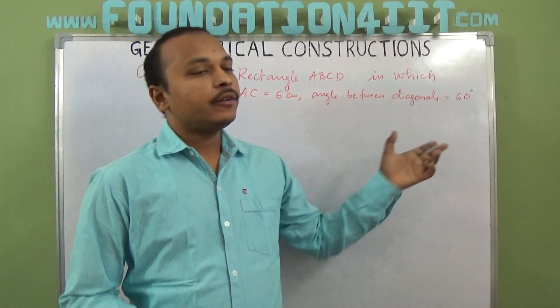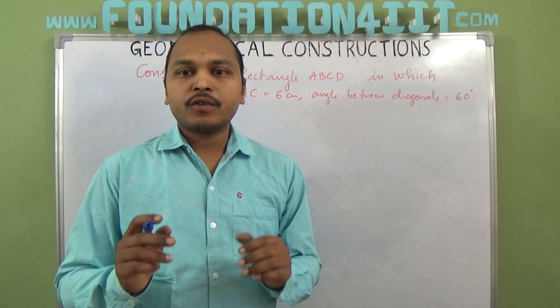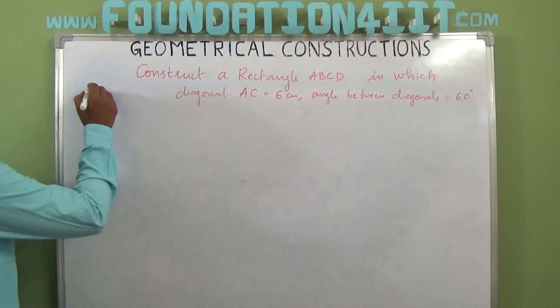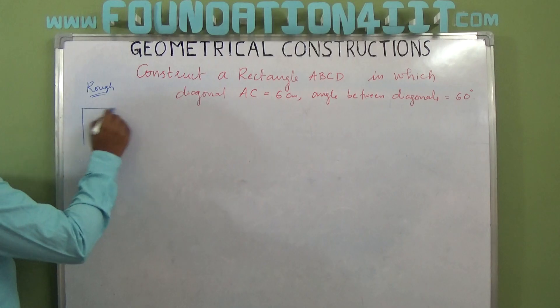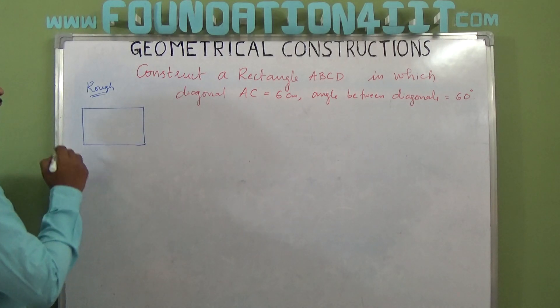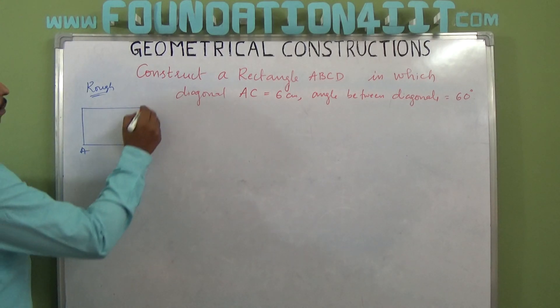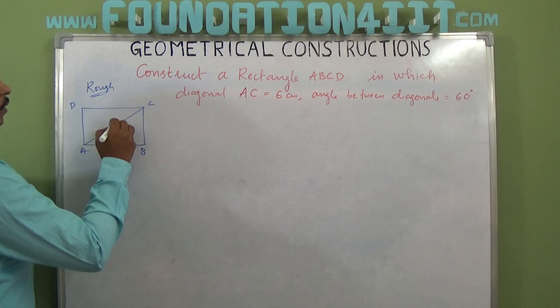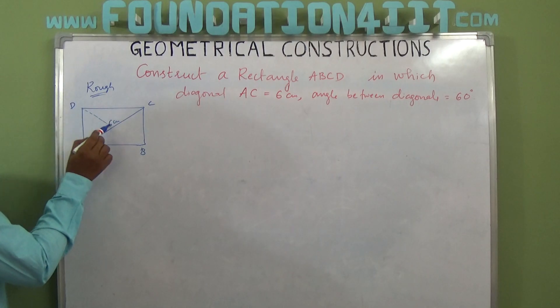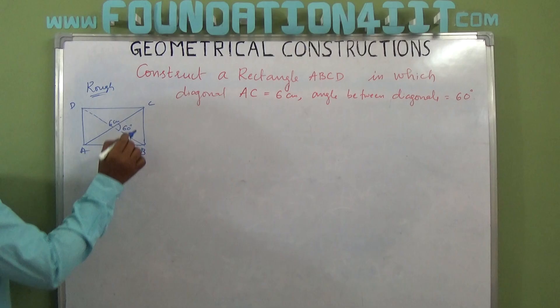Observe the rough diagram. In this rectangle ABCD, distance from A to C is 6 centimeters and one more diagonal is BD, but the angle between them is 60 degrees.